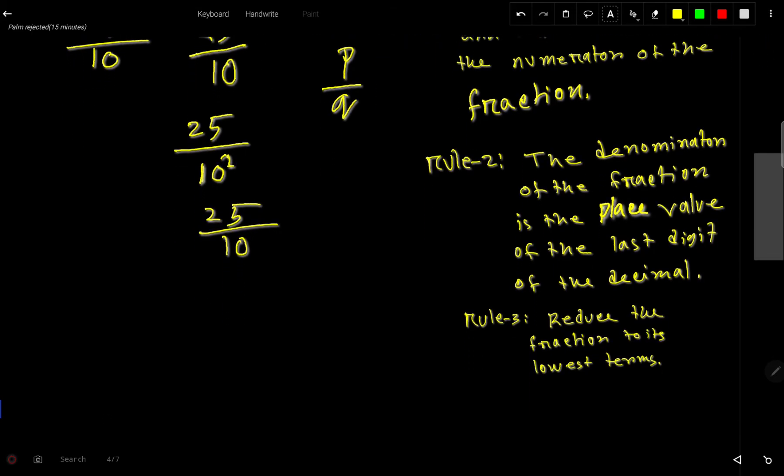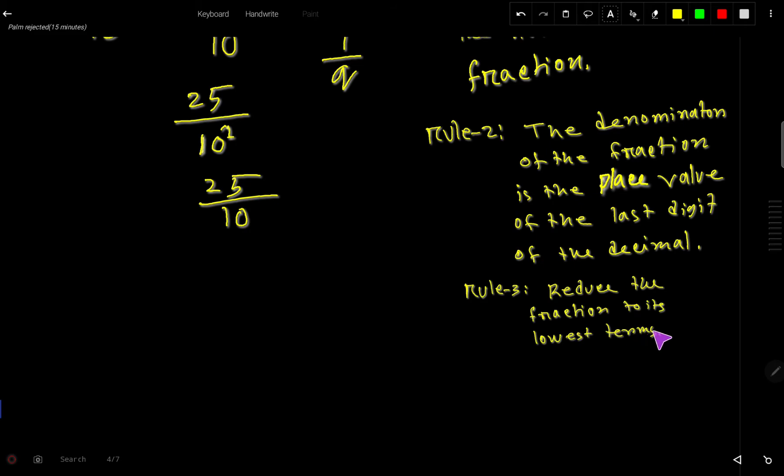At third step we have to reduce the fraction to its lowest terms. For this we have to split this 25 as a product of two numbers. We can write 5 times 5 that gives us 25. And we can write 10 like this 5 times 2. So this 5 and this 5 cancel each other. So we are getting here 5 over 2.